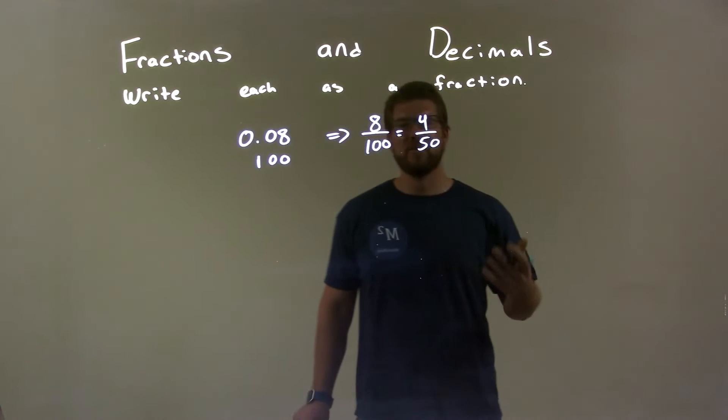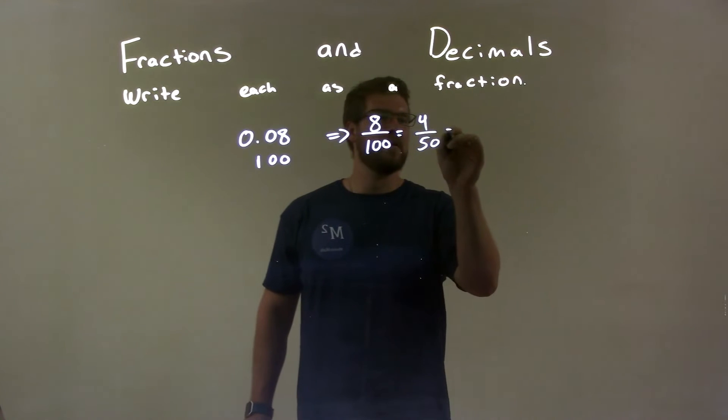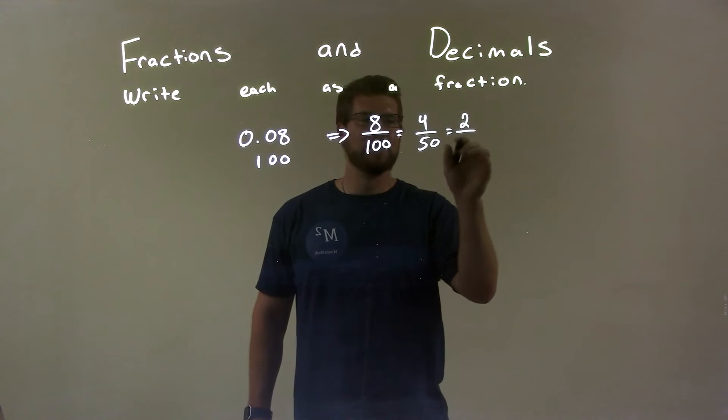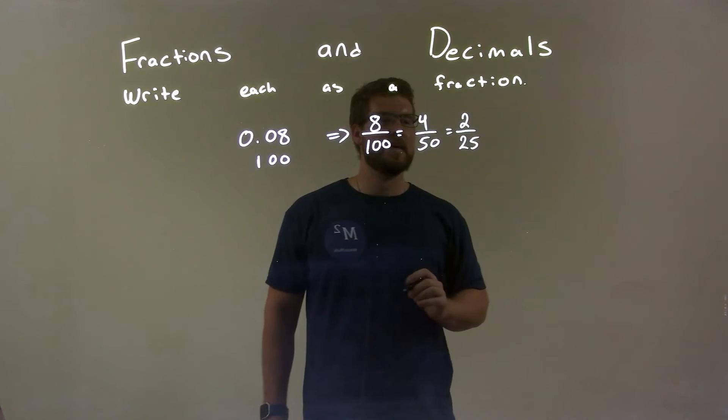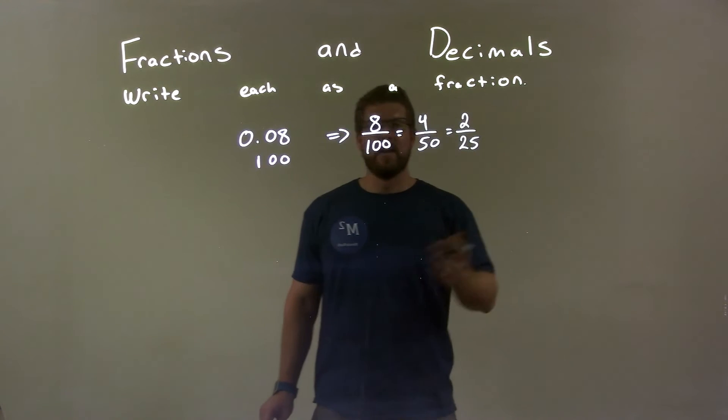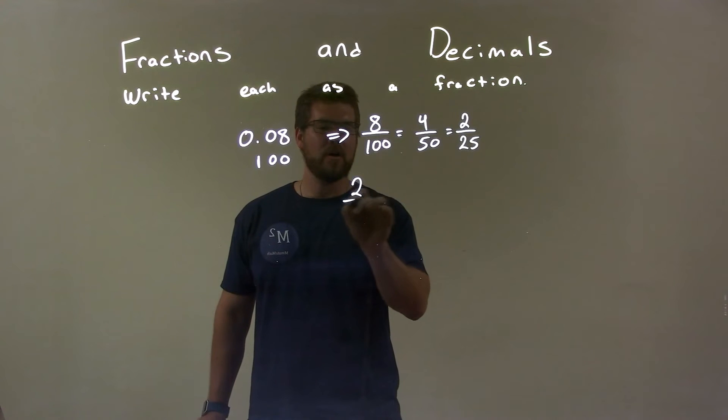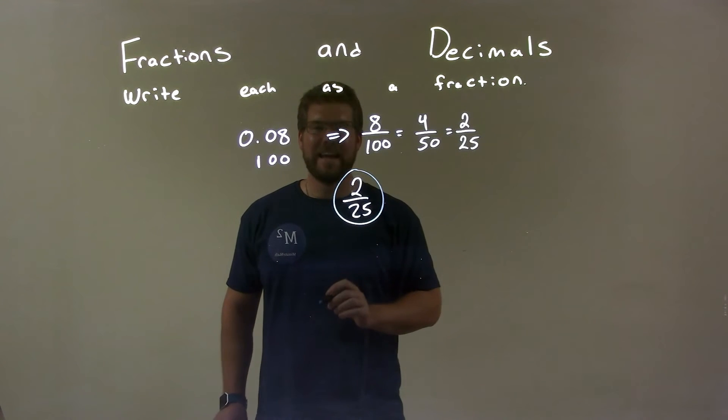But both of these are also divisible by 2. 4 divided by 2 is 2 and 50 divided by 2 is 25. And after that, I can't simplify it anymore. And so 2 over 25 would be my final answer.